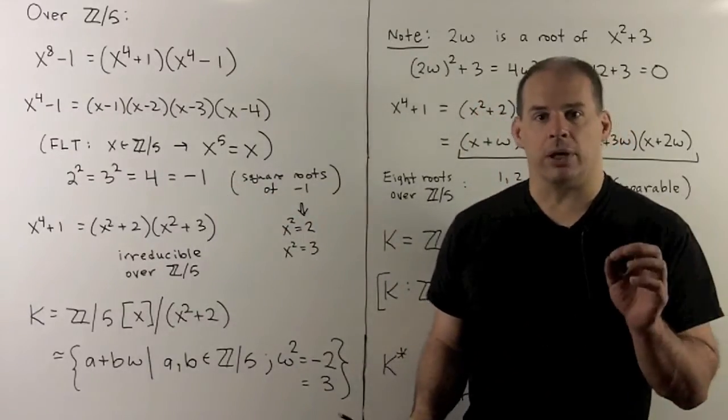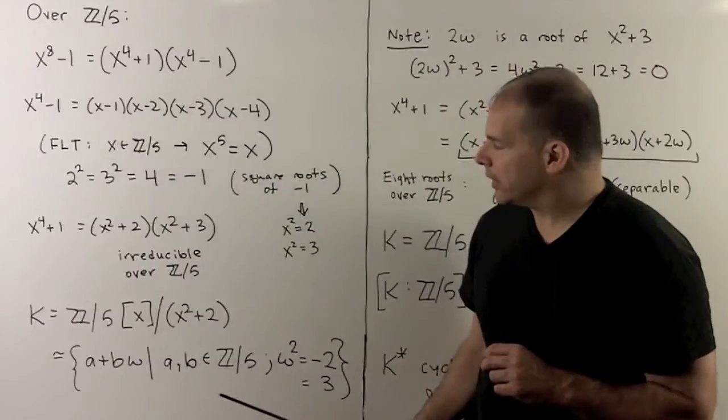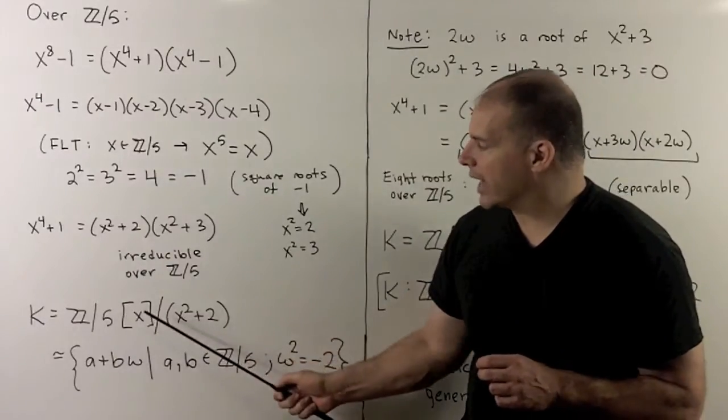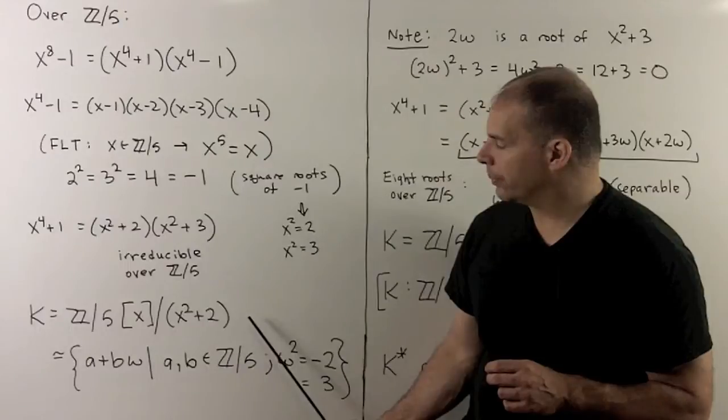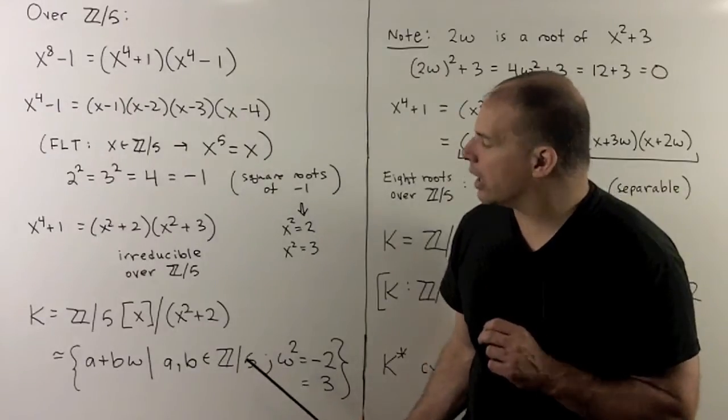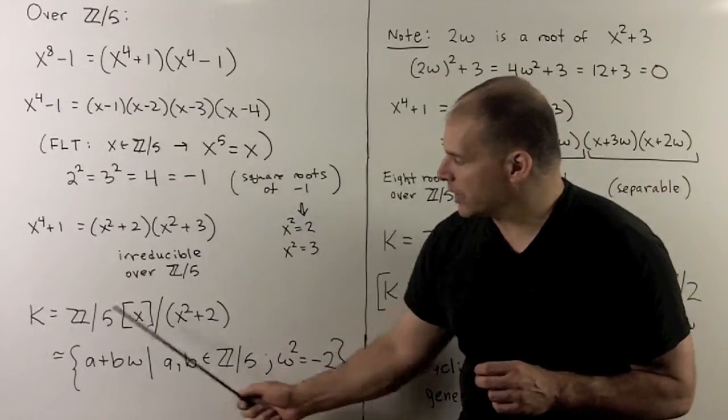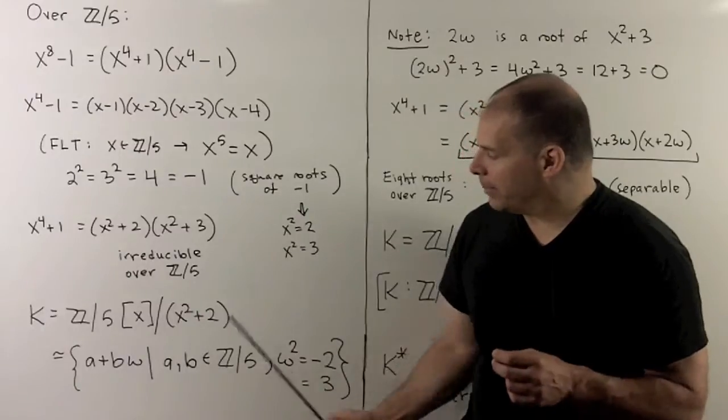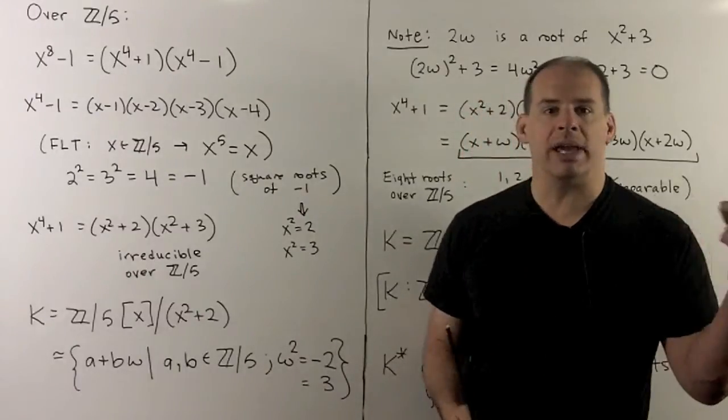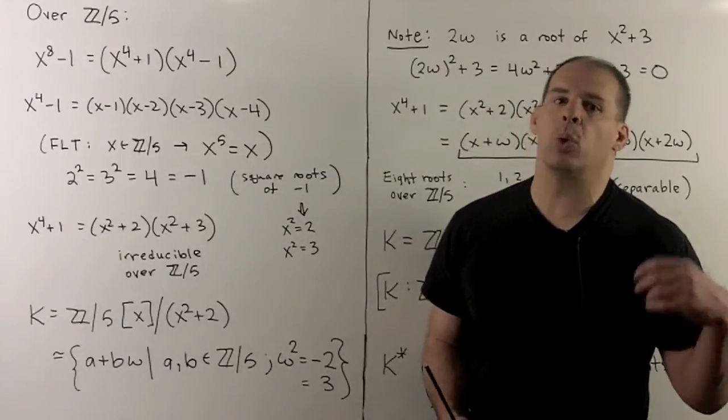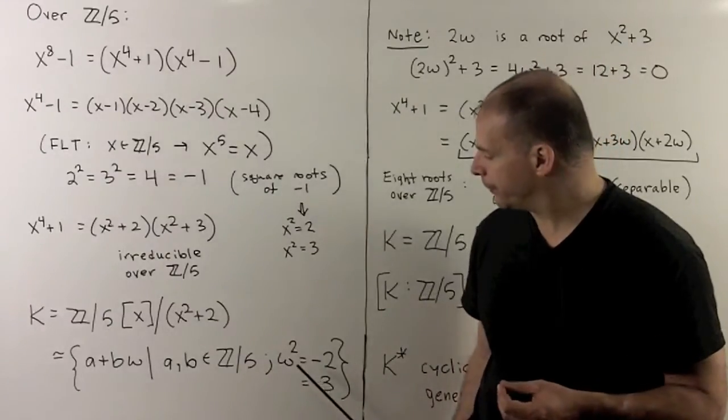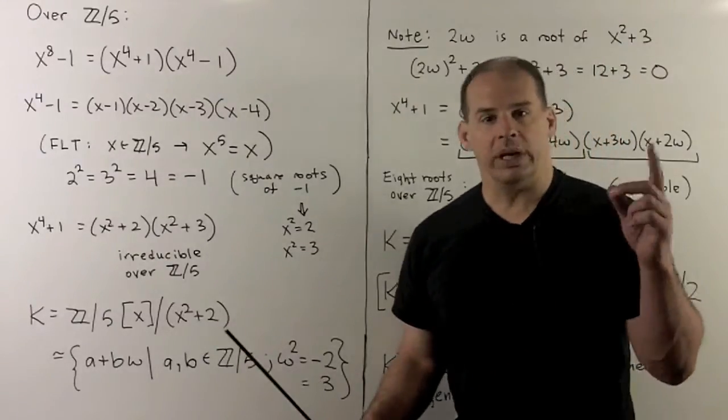Now, for the splitting field, as a first step, let's take Z mod 5 adjoin x, modded out by the ideal (x^2 + 2). So what we're doing here, I'm going to take all elements of the form a + bω, where a and b are in Z mod 5. And I have that ω^2 is equal to -2. Or in Z mod 5, that's equal to 3.